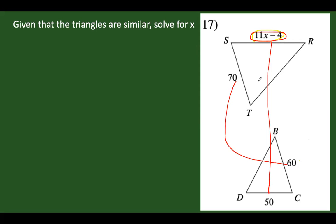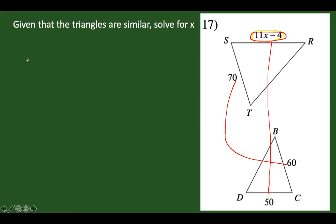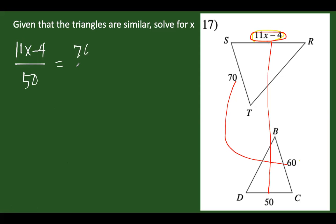Let's assume that these are the corresponding parts. Since these two triangles are similar, therefore the corresponding sides are proportional. So we have: 11x minus 4, divided by 50, is equal to 70 over 60.